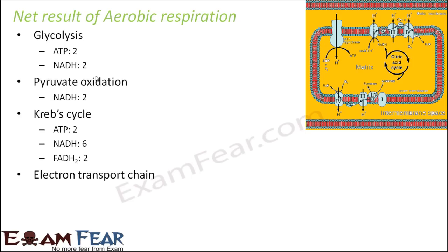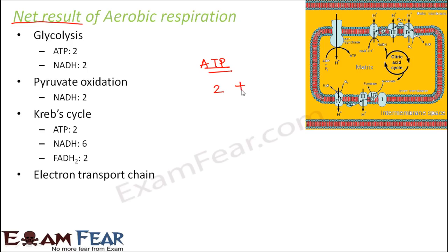We have already discussed everything step by step. And what happened during the electron transport chain? When we say net result of aerobic respiration, we want to know how many total molecules of ATP were produced. So if we just count the total ATP here, we see 2 from glycolysis plus 2 from Krebs cycle so far.